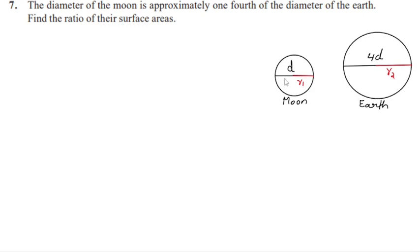Let's take the diameter of the moon as d. According to the question, the diameter of the earth is four times the diameter of the moon. So the diameter of the moon is d, and the diameter of the earth is 4d. We have to find the ratio of the surface areas of the moon and the earth.